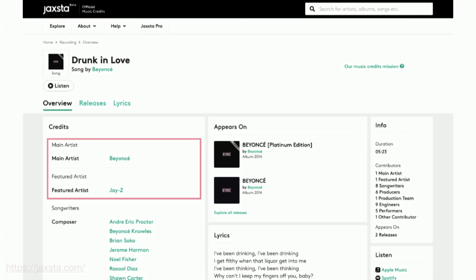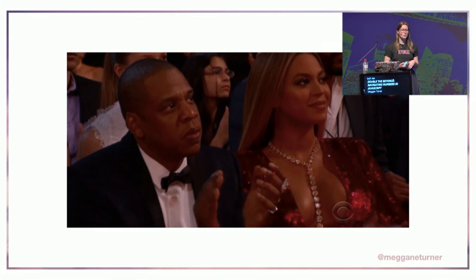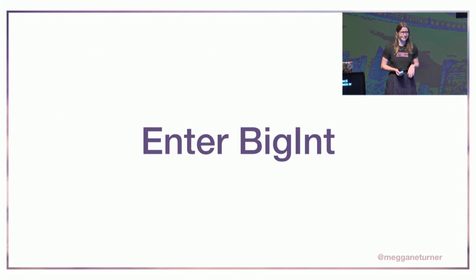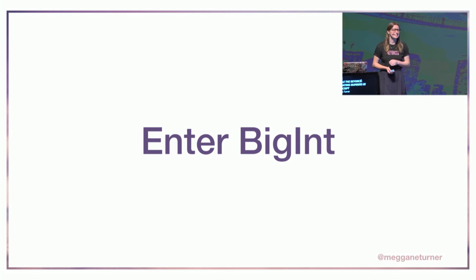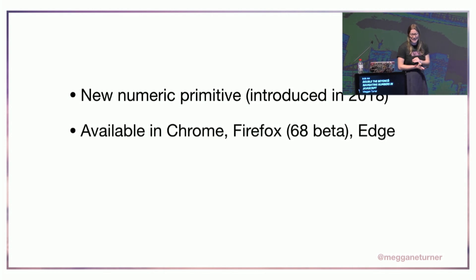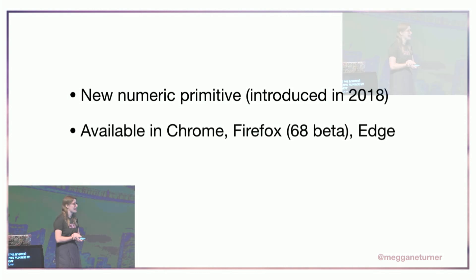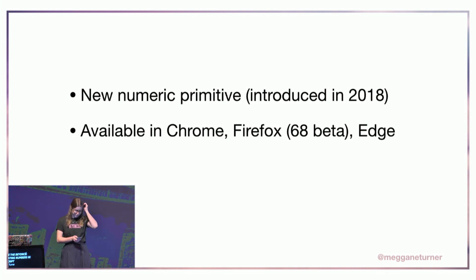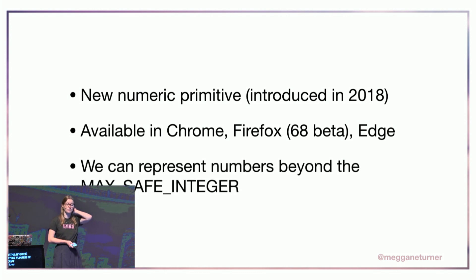We also now have BigInt — a new numeric primitive introduced about 12 months ago. It is available in Chrome, Firefox 68 Beta, and Edge. It means we can represent numbers beyond that maximum safe integer, which is pretty exciting.